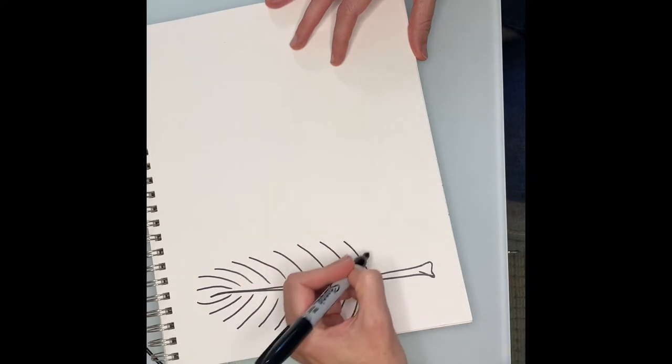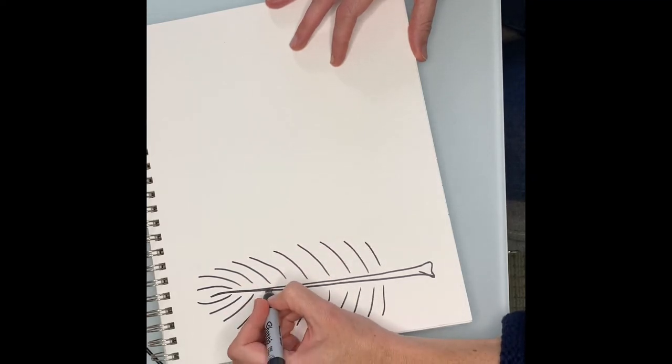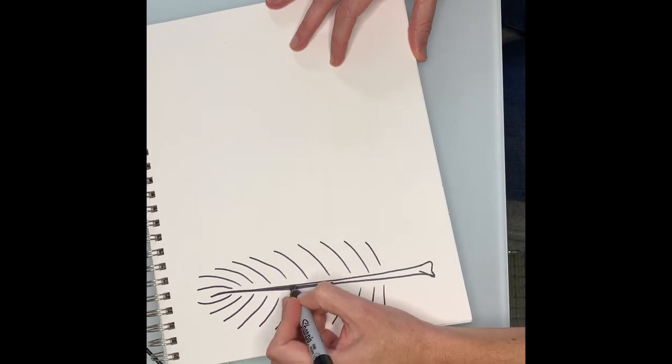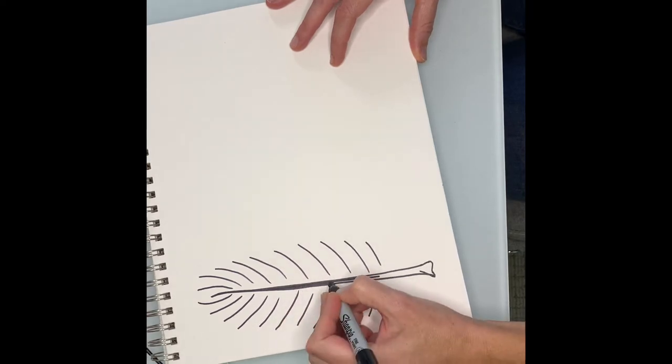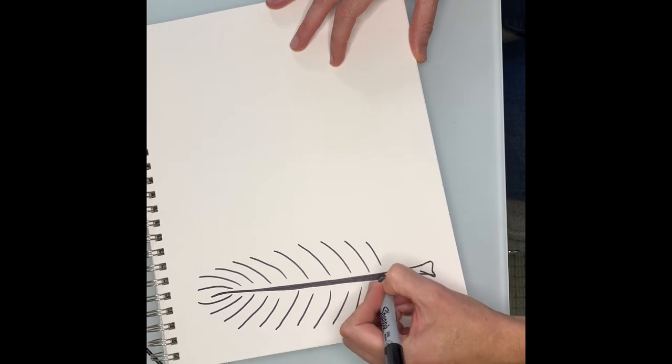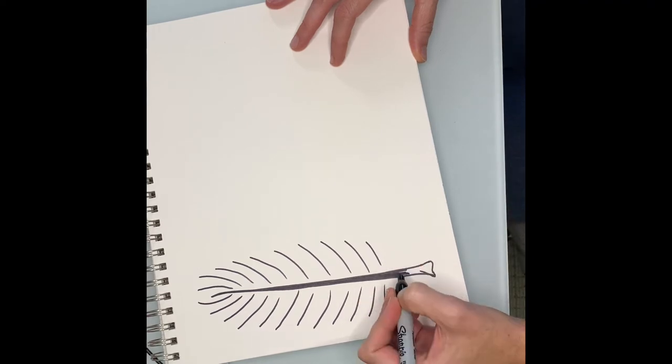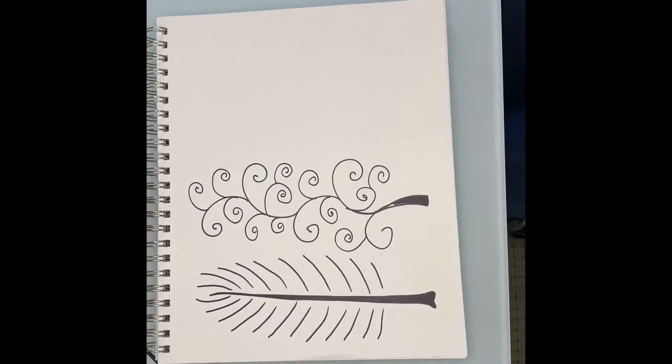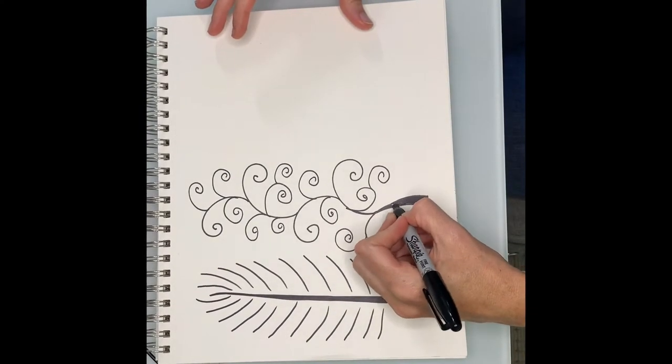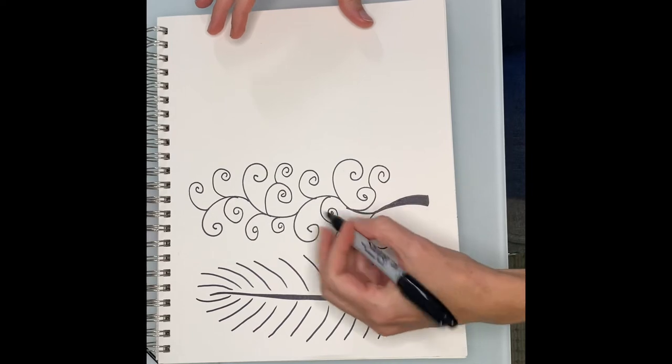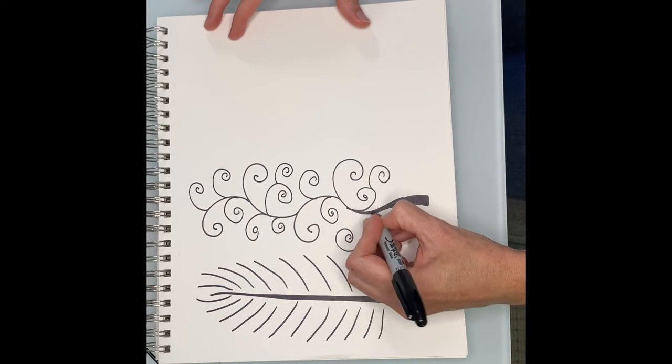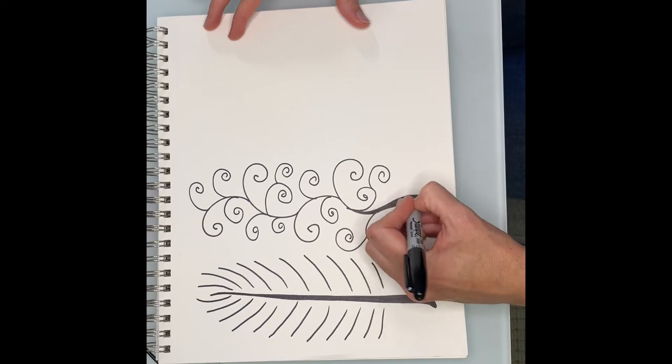So I'm gonna fill in this trunk so it looks more like a tree and then I'm gonna move on to my next tree. I created my second tree that's a little bit of curlicue craziness and I'm now going to widen the trunk so this tree can in fact support itself.